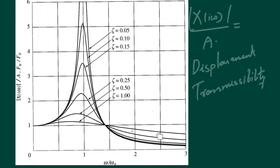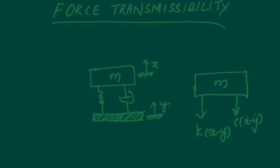One more thing to be careful about: in the isolation regime (ω/ωn > √2), the behavior is slightly counterintuitive. From intuition, we might say that more damping would reduce displacement transmissibility, but actually the higher the damping present in the system, the higher the displacement transmissibility in the region where ω/ωn is greater than √2.